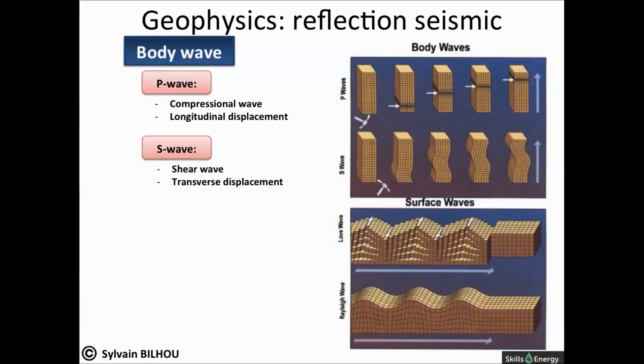They have a longitudinal displacement. S-waves or secondary waves are slower than P-waves. They have a transversal displacement as they induce shearing of the particles.